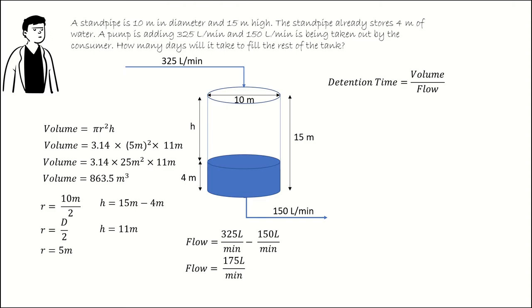Now note, the units are not compatible. Our volume is in cubic meters. Our flow is in liters per minute. We need to convert our flow into the base units of cubic meters per minute. Multiplying 175 liters per minute by the conversion factor, one cubic meter is the same as 1,000 liters, allows us to cancel the liter units out, leaving us with cubic meters per minute. 175 divided by 1,000 gives us a flow rate of 0.175 cubic meters per minute.